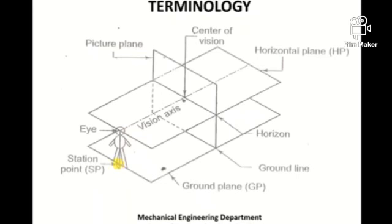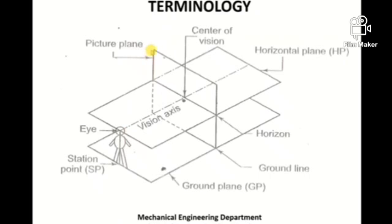The height of the observer is the distance between the feet and the eye level. We assume another plane passing through the eye level of the observer, called the horizontal plane. So you have a ground plane passing through the feet level and a horizontal plane passing through the eye level. Then there is a vertical plane called the picture plane, which is also a very important term.